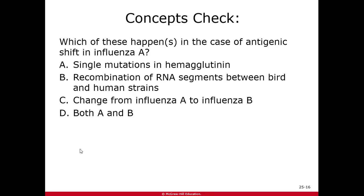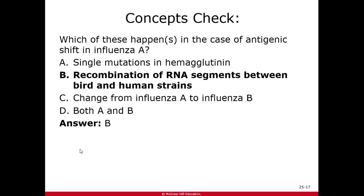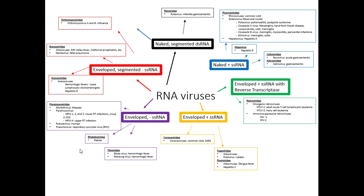Concept check: antigenic shift in influenza A involves recombination of RNA segments between bird or other animal strains and human strains. Moving on to our enveloped, non-segmented negative sense single-stranded RNA group, which includes the large paramyxoviridae group, rhabdoviridae, and filoviridae.